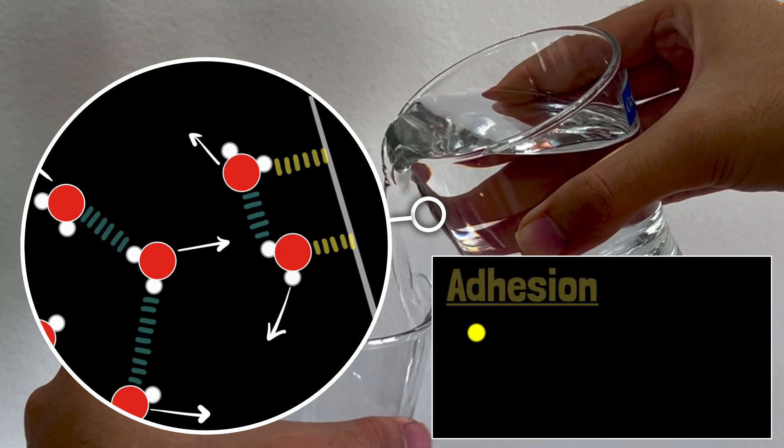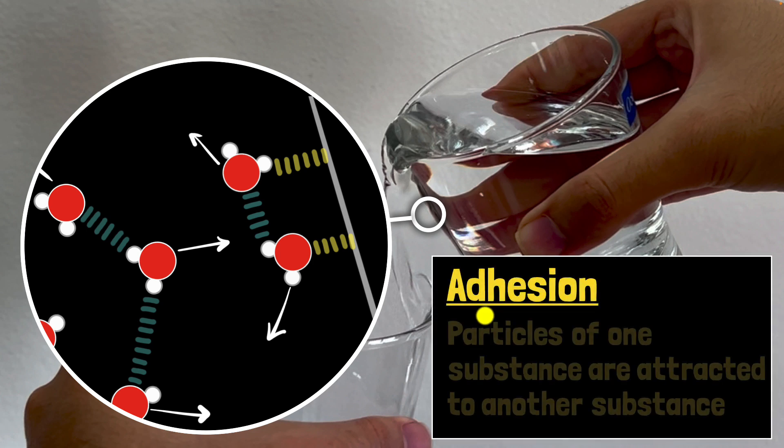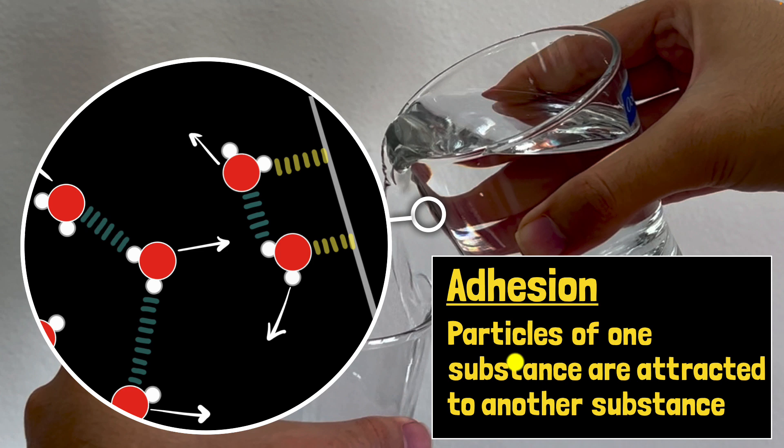This is called adhesion. So adhesion is when particles of one substance, like water molecules, are attracted to another substance, like that of glass particles. So water molecules have cohesion, which means they're attracted to each other, and they also have adhesion. They're also attracted to other particles.